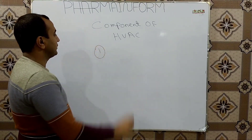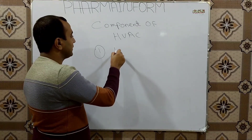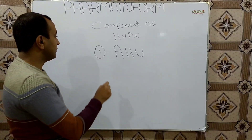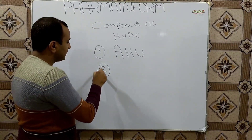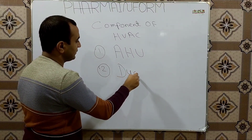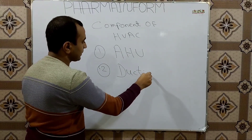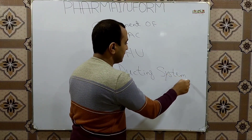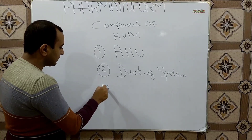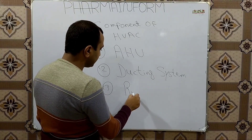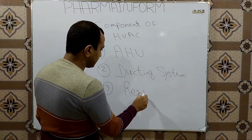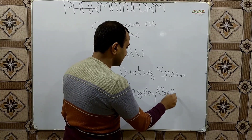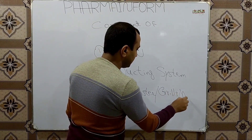HVAC has three main components. The first one is the Air Handling Unit, or AHU. The second component is Ducts, or the Ducting System. The third component is Registers, Grills, or Diffusers.